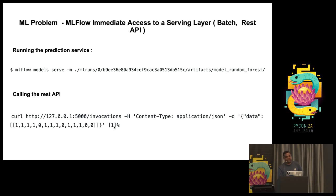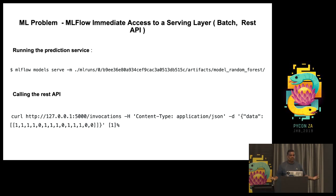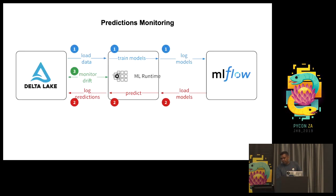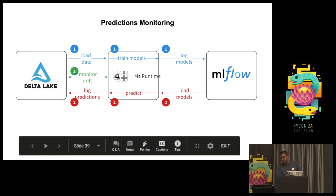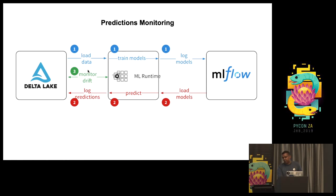It's a very fast way to iterate for data scientists — from day one they can have an API for their model that's easily testable. If the model is profitable and makes sense for the company, more engineering work can follow. You can also do champion-challenger testing because with all the tagging you can run two models simultaneously, log metrics, and compare. For predictions monitoring: log your model in MLflow, load it, predict, and log predictions in Delta Lake. You can then monitor drift and alert with tools like Elasticsearch and similar tools, with dashboards and potentially PagerDuty alerts.